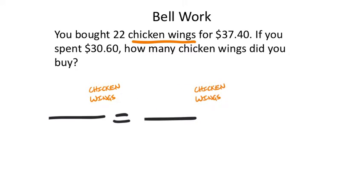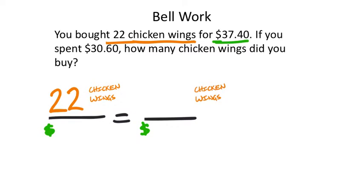Chicken wings and chicken wings in the numerator. Next up, we see that we're comparing chicken wings with dollars, which means I'm going to put dollars into the denominator. If you have these flipped, you're going to get the same answer. So first up, they say 22 chicken wings — I apply the numerical value 22 in the numerator. And that costs $37.40, so I put $37.40 into the denominator.